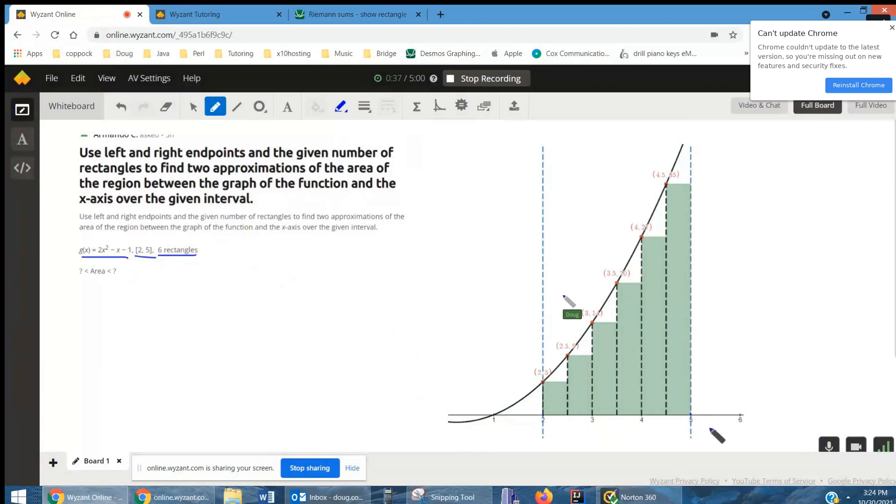The key is that the width, we're going to make the width of each rectangle the same, so that's b minus a over the number of subintervals, and in this case, 6 rectangles. Well, 5 minus 2 is 3, 3 over 6, each of these little rectangles has a width of 1 half.